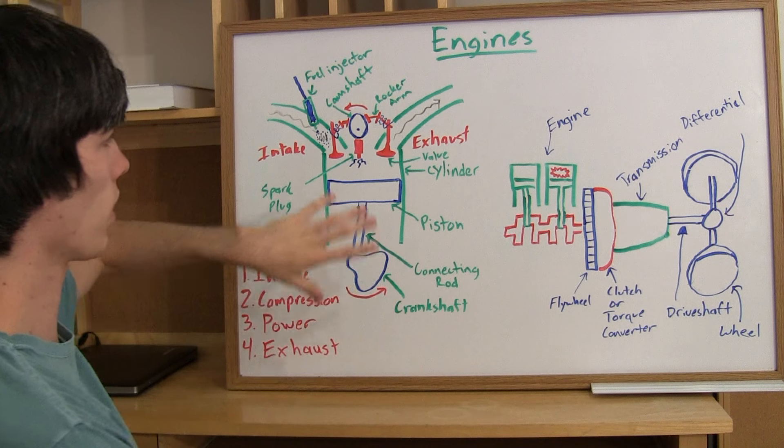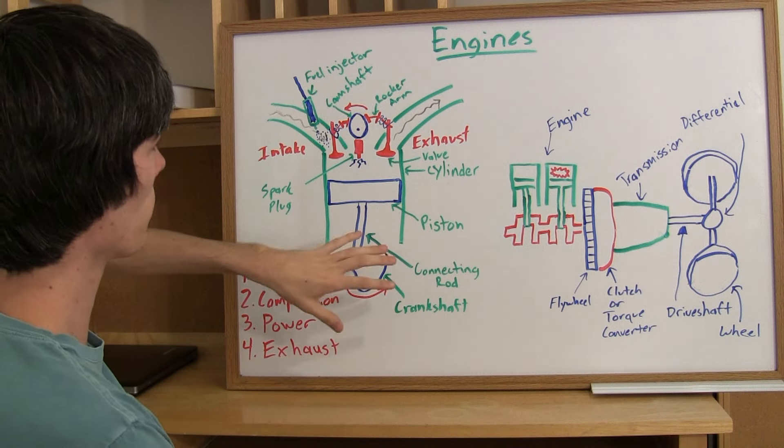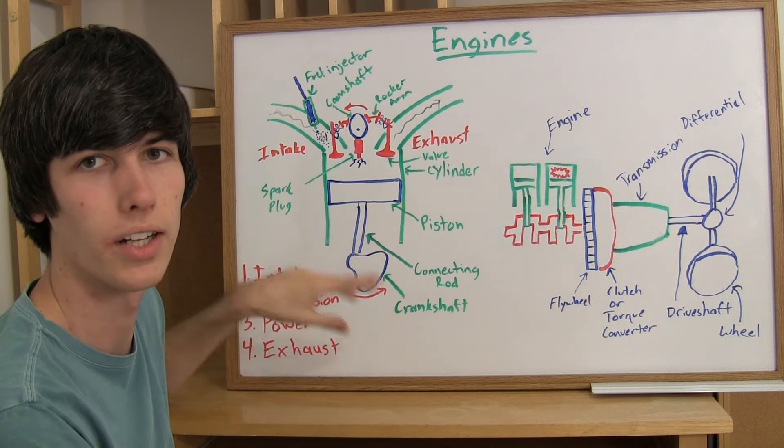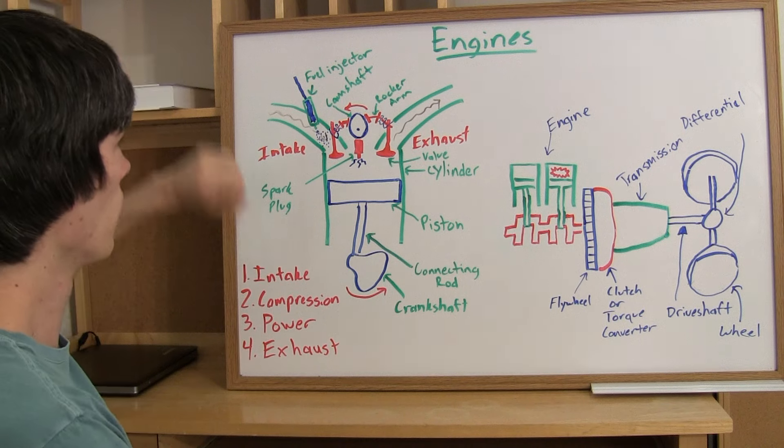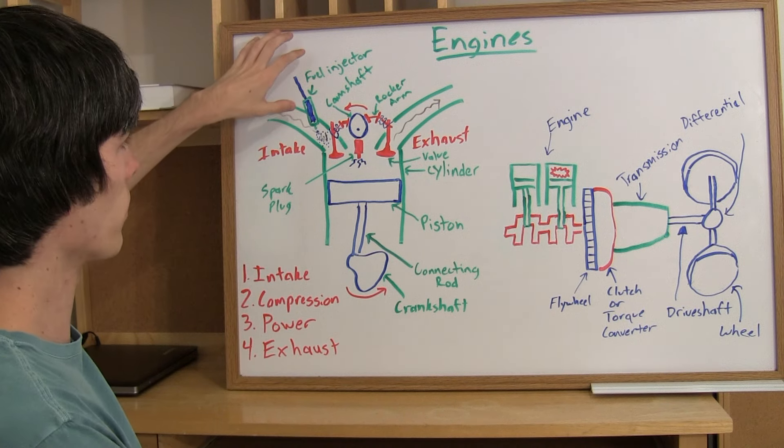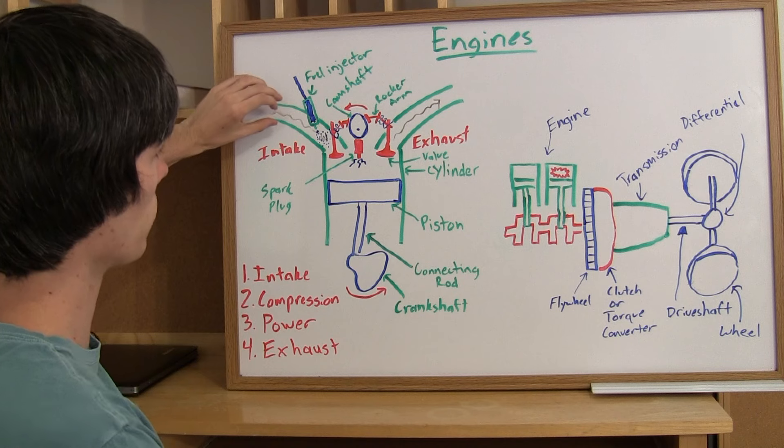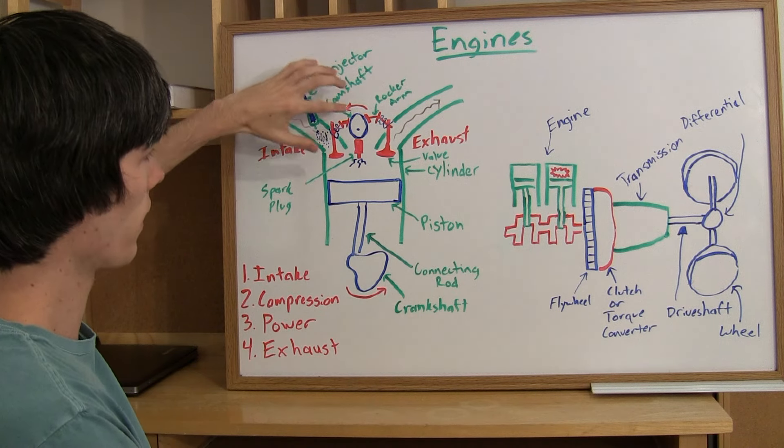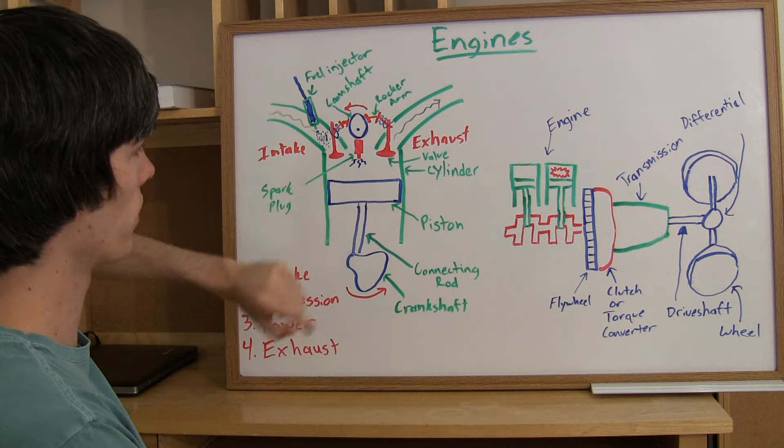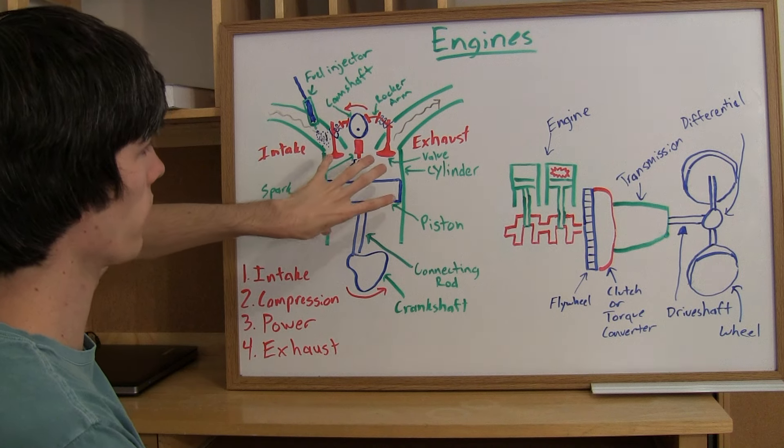And so we're going to talk about engines and how they work. So first I'm just going to go through pretty much all the components within the engine and then I'll talk about how they work together. So just starting at the top we've got fuel injectors which spray fuel into your intake manifold. We've got a camshaft that's responsible for opening valves that allow air to go in or out of the cylinder.